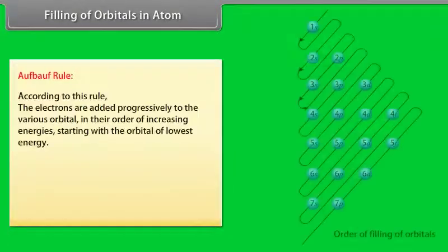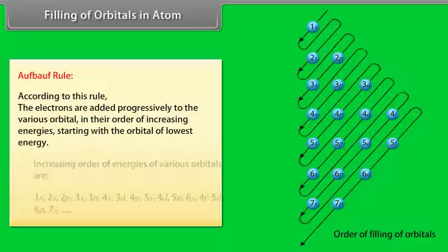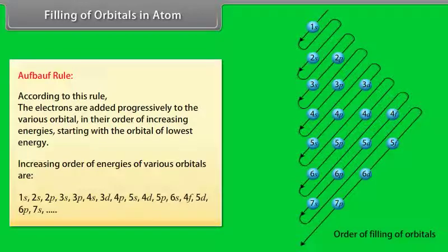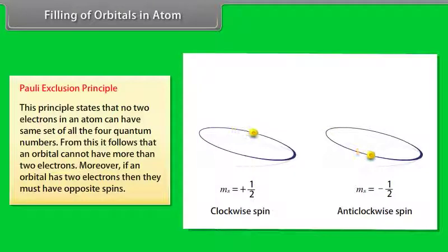Filling of orbitals in atoms — Aufbau rule: According to this rule, electrons are added progressively to the various orbitals in their order of increasing energies, starting with the orbital of lowest energy. Pauli's Exclusion Principle states that no two electrons in an atom can have the same set of all four quantum numbers. From this, it follows that an orbital cannot have more than two electrons, and if an orbital has two electrons, they must have opposite spins.